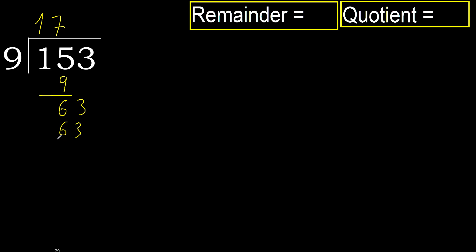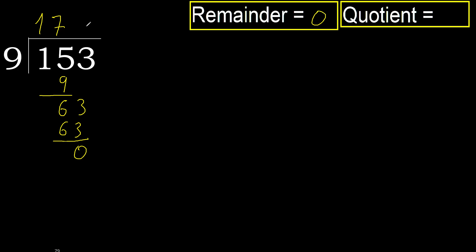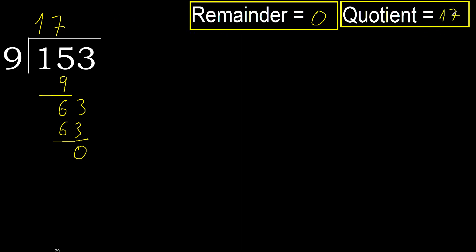Ok, 63 is not greater. 63 minus 63 is 0. Next — there is no number, therefore finished. 153 divided by 9 is 17.